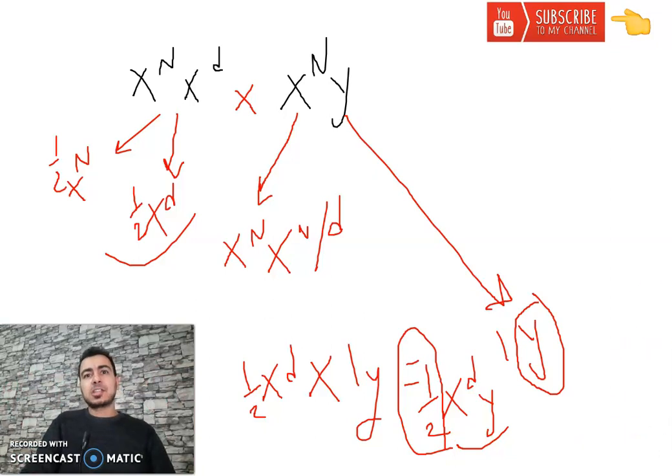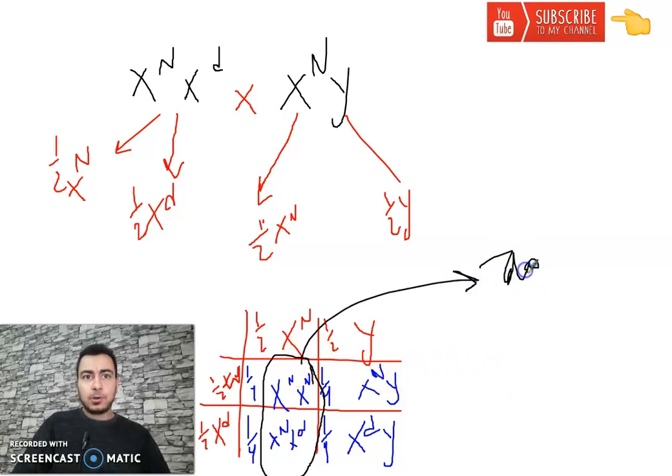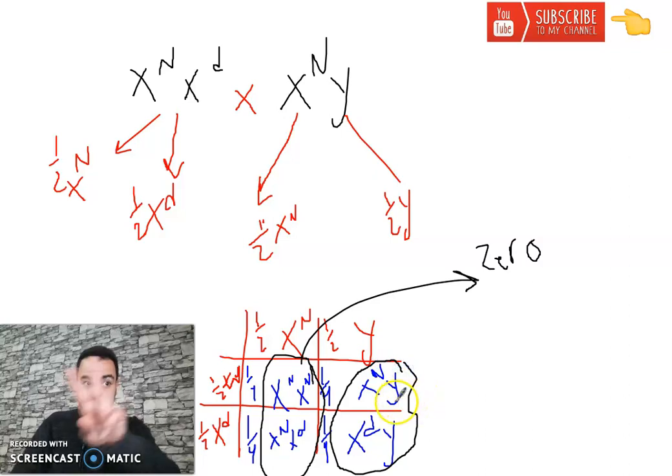In case of factorial analysis, I take the mother XN XD, it gives half XN half XD. And the father XN Y, half XN half Y. I put them in the table: half times half, one over four in each square. XN XN, XN Y, XN XD, XD Y. All females are normal. Then the risk to have an affected female is zero.